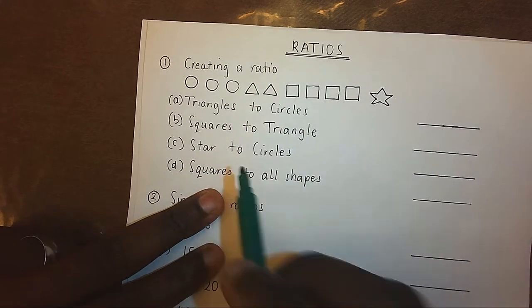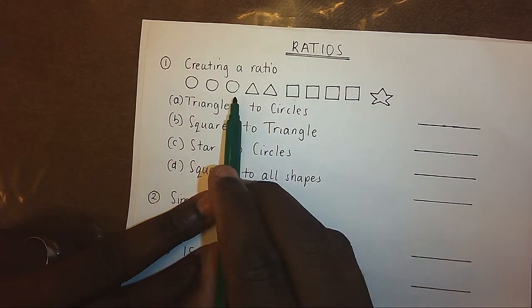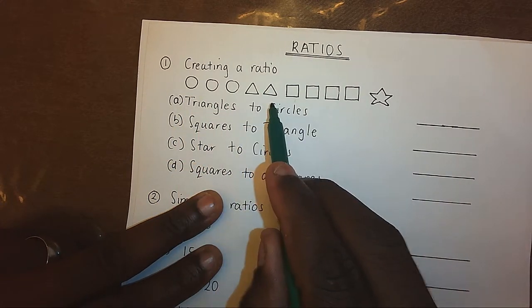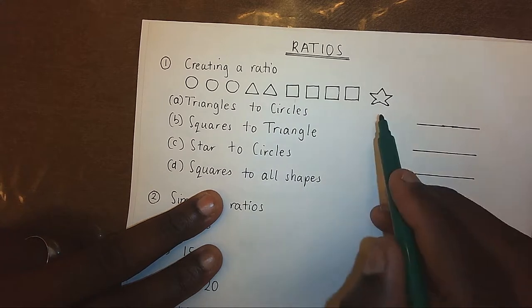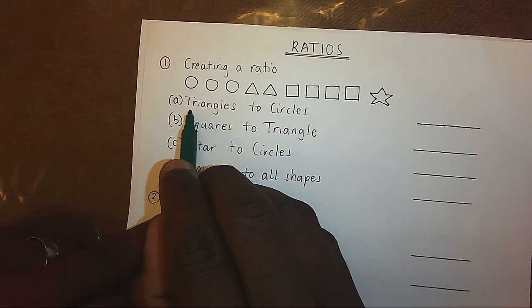Now, for instance, we have different shapes here. You can see we have circles, we have triangles, we have squares, and we have a star. Now, we can create a ratio.